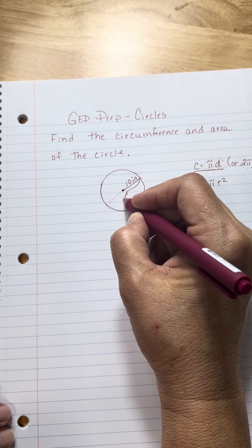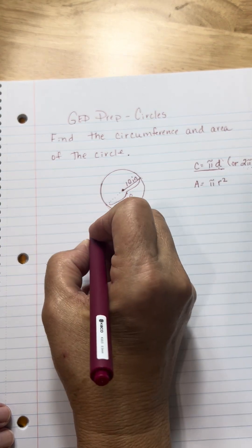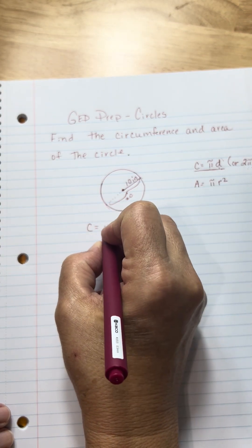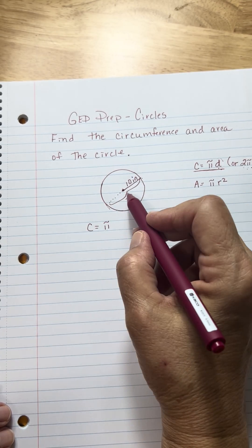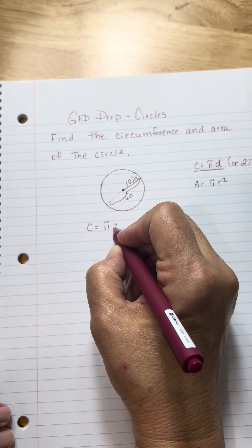If this is 10 inches, then the whole diameter is 20. So first, let's find the circumference. That's going to be pi times, either 2 times the radius or the diameter, which is 20.